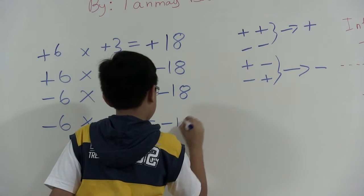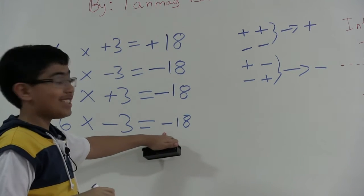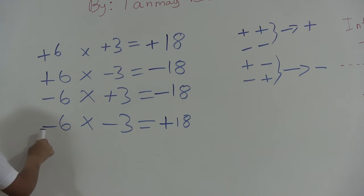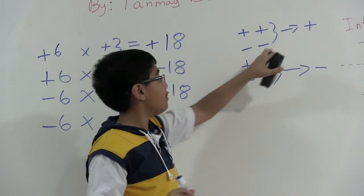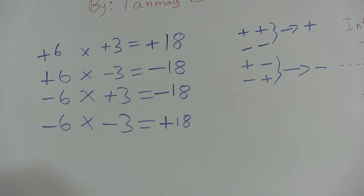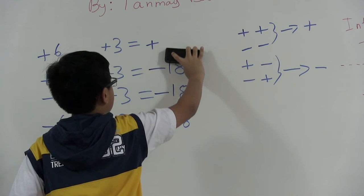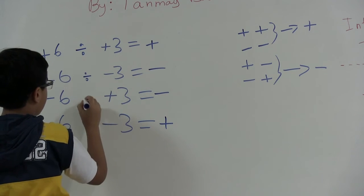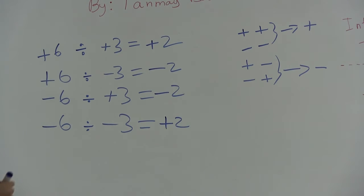Lastly, negative six times negative three — the answer might seem like it should be negative 18, but wait, that was just to test you! Following the multiplication rule, two negatives are the same sign, so the result is actually positive 18. Now let's move to division. Watch this — all I need to do is replace the multiplication symbols with division symbols and change the answers to twos, since six divided by three equals two.